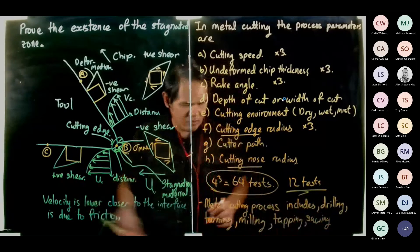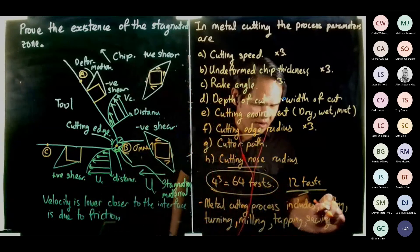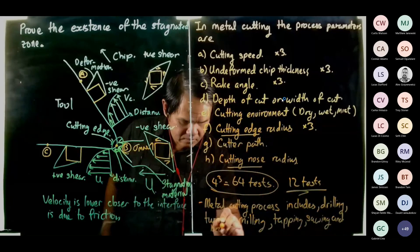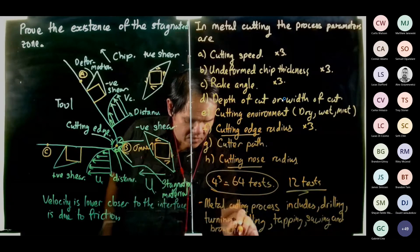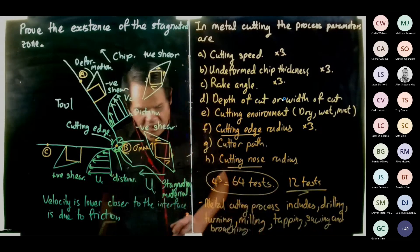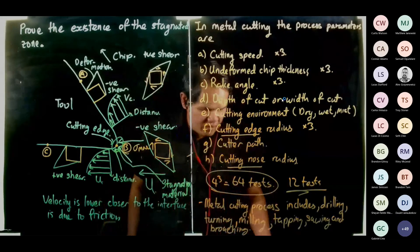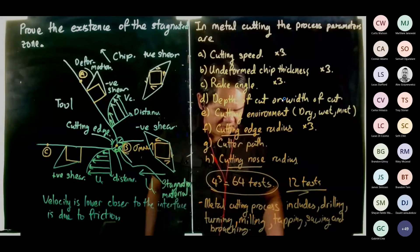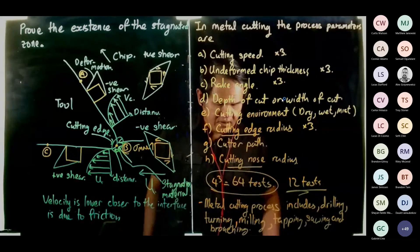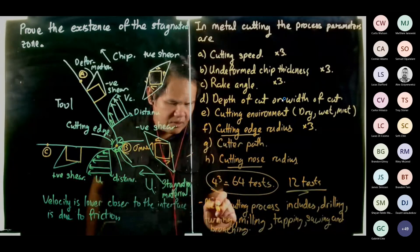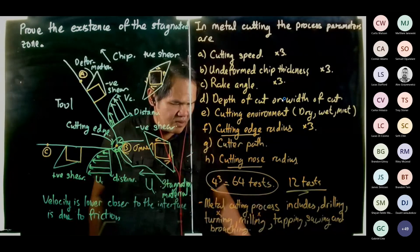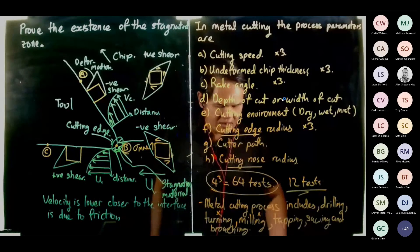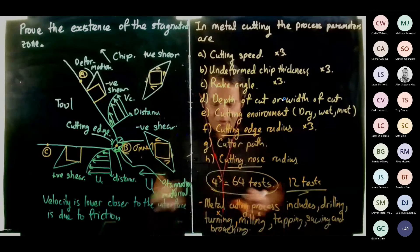Sawing—when you saw a piece of wood there is metal cutting—and broaching. So all these are metal cutting processes. I will only highlight, if time permits, I will mainly talk about turning and milling. If time permits we'll go into milling.